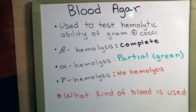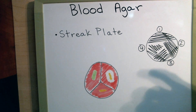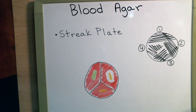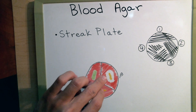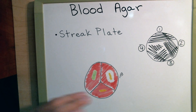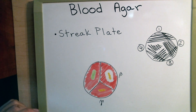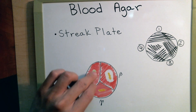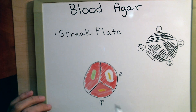A question that comes up on every exam: what kind of animal blood are we using in this lab? The technique used is simply a streak plate. In the results shown, the beta hemolytic group has bacterial growth in yellow with complete clearing of the agar around it. Gamma shows growth but no lysis of the red blood cells. The partial hemolysis — alpha — shows a small ring of hemolysis with that characteristic green color.